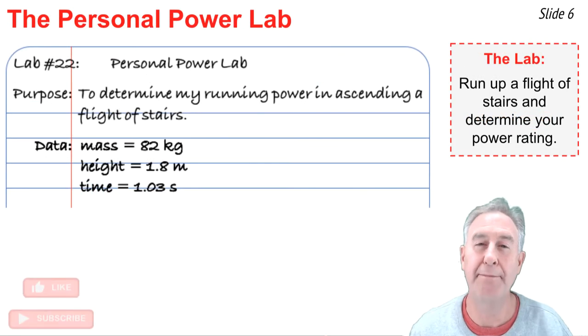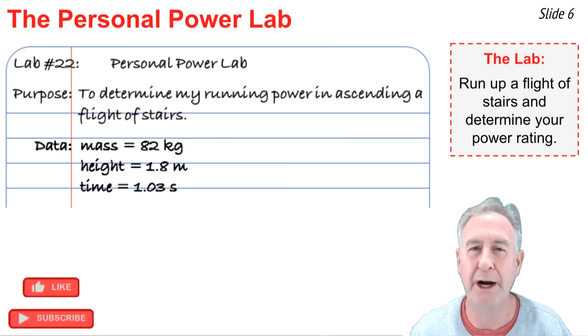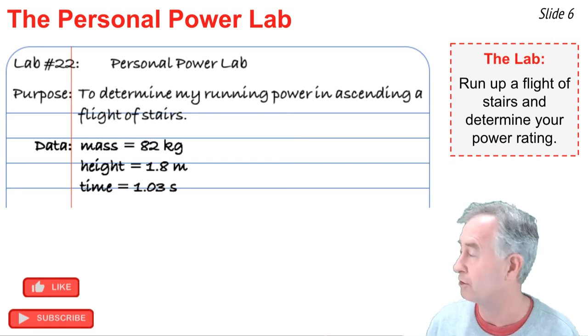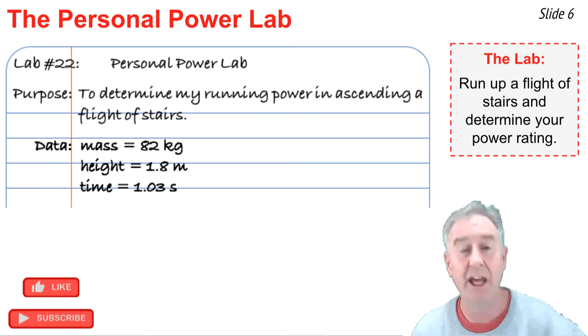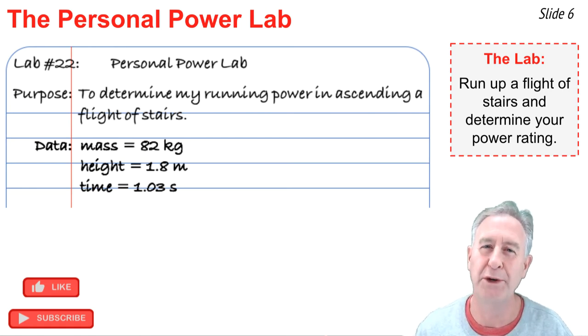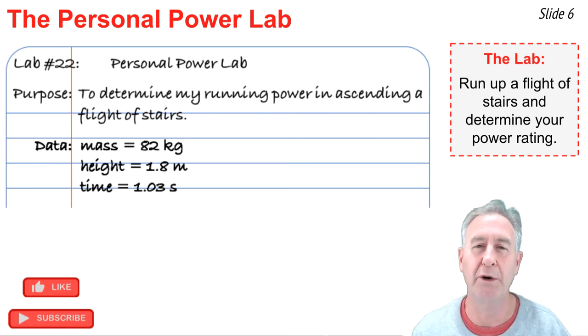A common lab in a physics course is the personal power lab, or sometimes called the staircase lab. In the lab, students run up a flight of stairs, usually at constant speed and as fast as possible, in order to determine their power rating. Here's a lab notebook entry for one such lab. The mass of the person is 82 kilograms. The person climbs 1.8 meters high and does it in a time of 1.03 seconds.